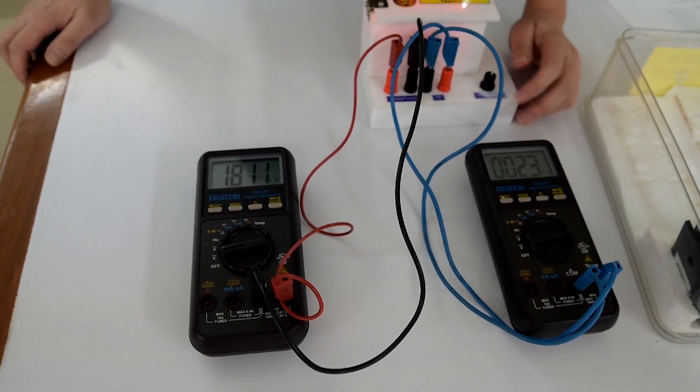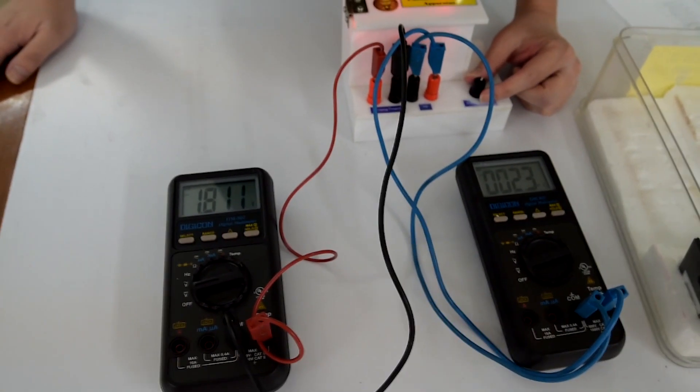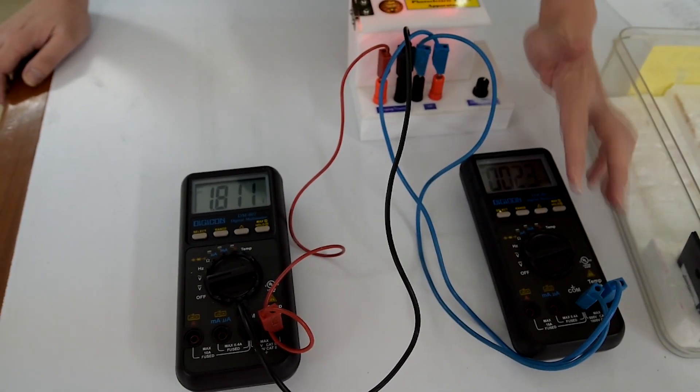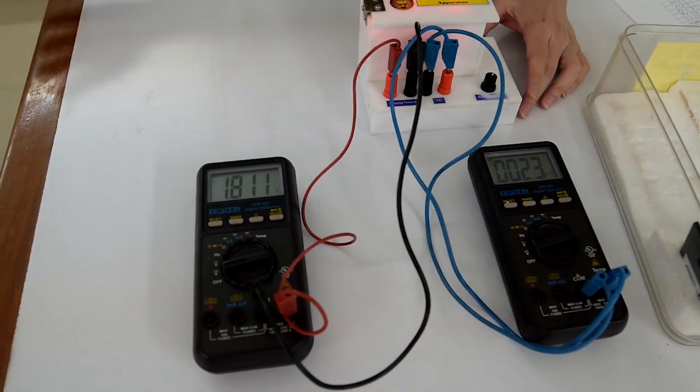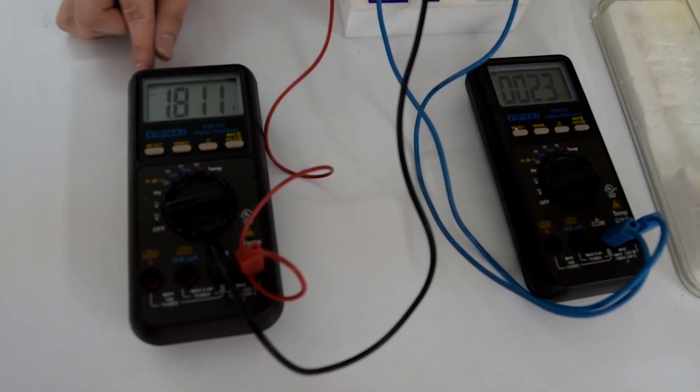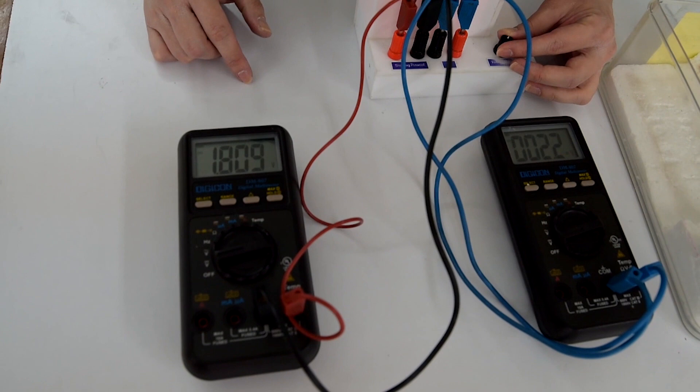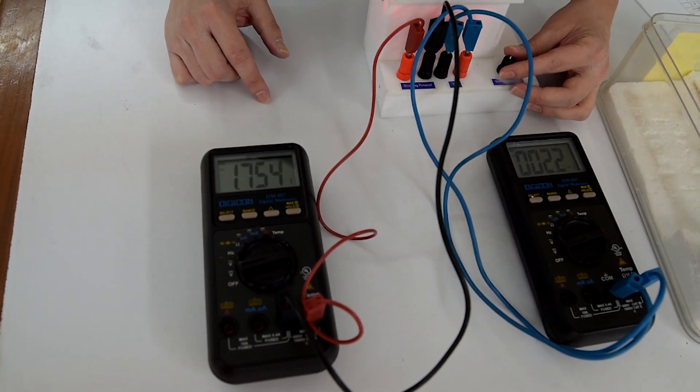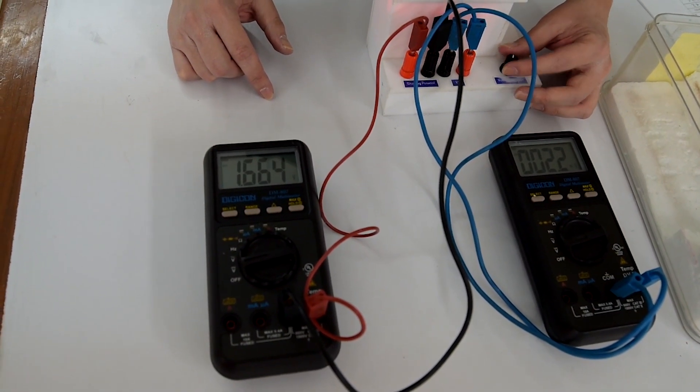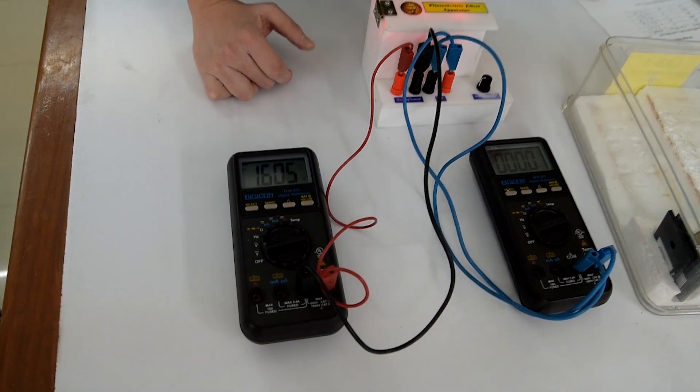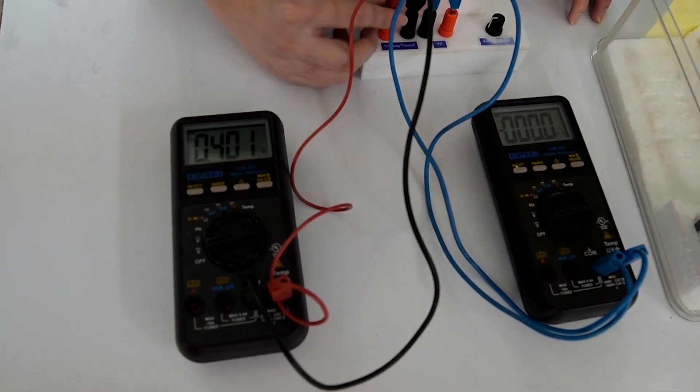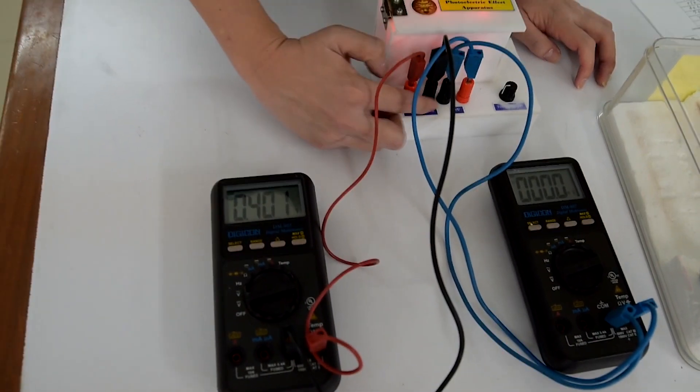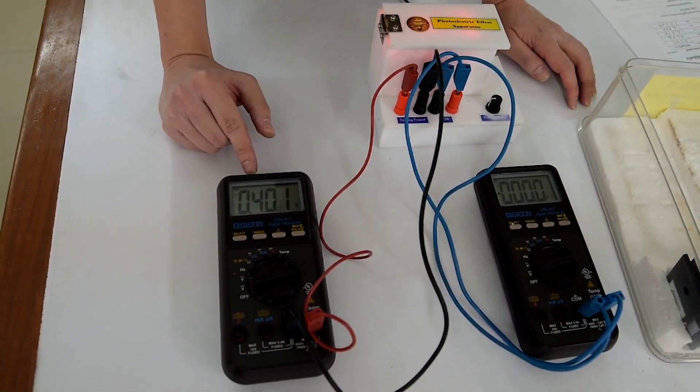Adjust the knob. We would like to stop the photoelectron. Then the potential of VR will be zero or no current. Then the potential from first digital multimeter will be the stopping potential. Adjust the knob until the potential of VR is approximately zero. At this point, read and record the voltage of first digital multimeter as the stopping potential.